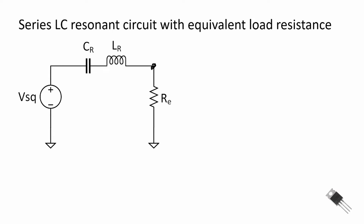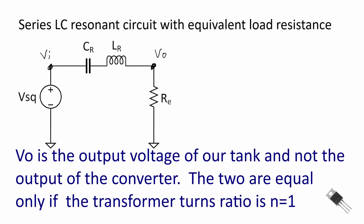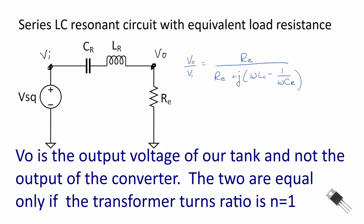In order to do that, let's define our input as a square wave into our tank circuit, and our output as the voltage that will appear across the primary windings of our transformer. We can use a voltage divider relationship, and we see that the output related to the input is equal to the equivalent resistance R sub E divided by R sub E plus j times omega LC minus one over omega CR — the impedances of the capacitor and inductor.